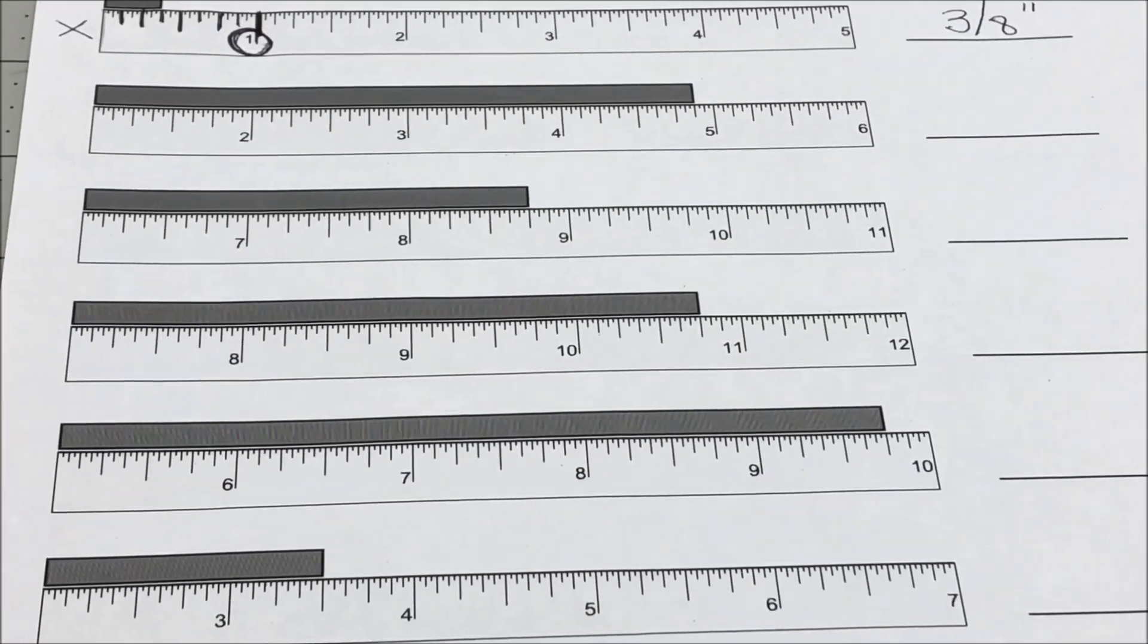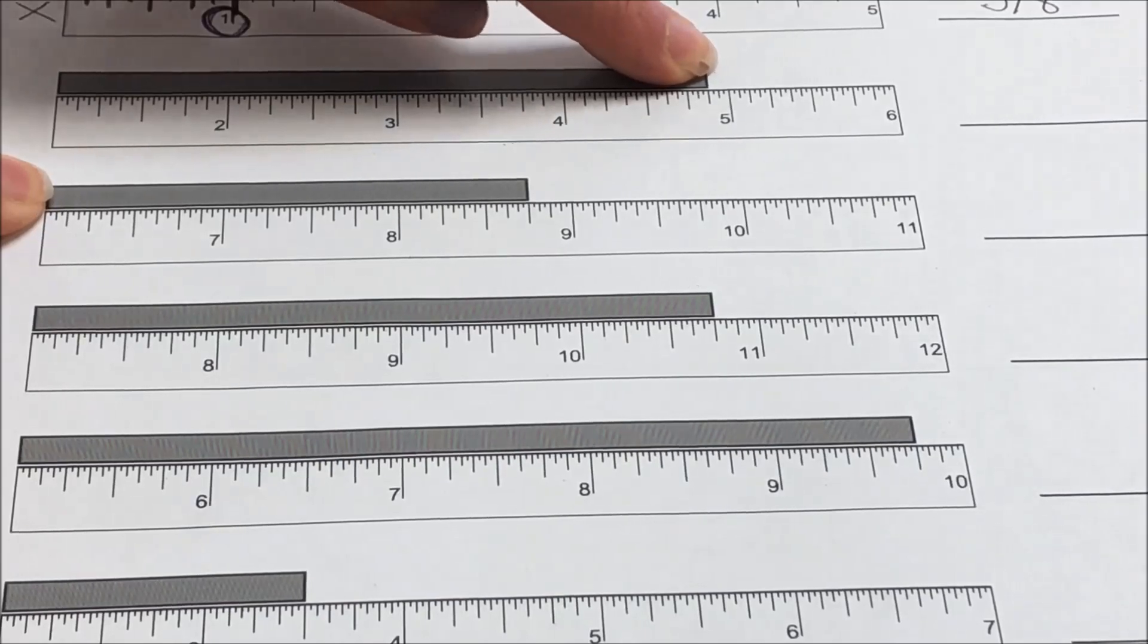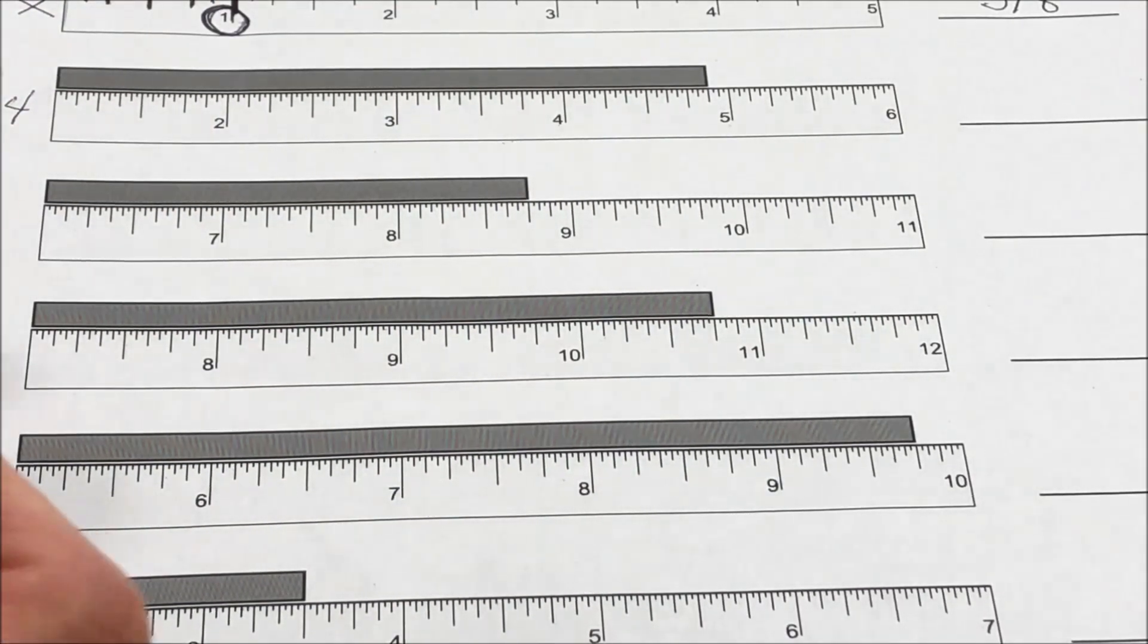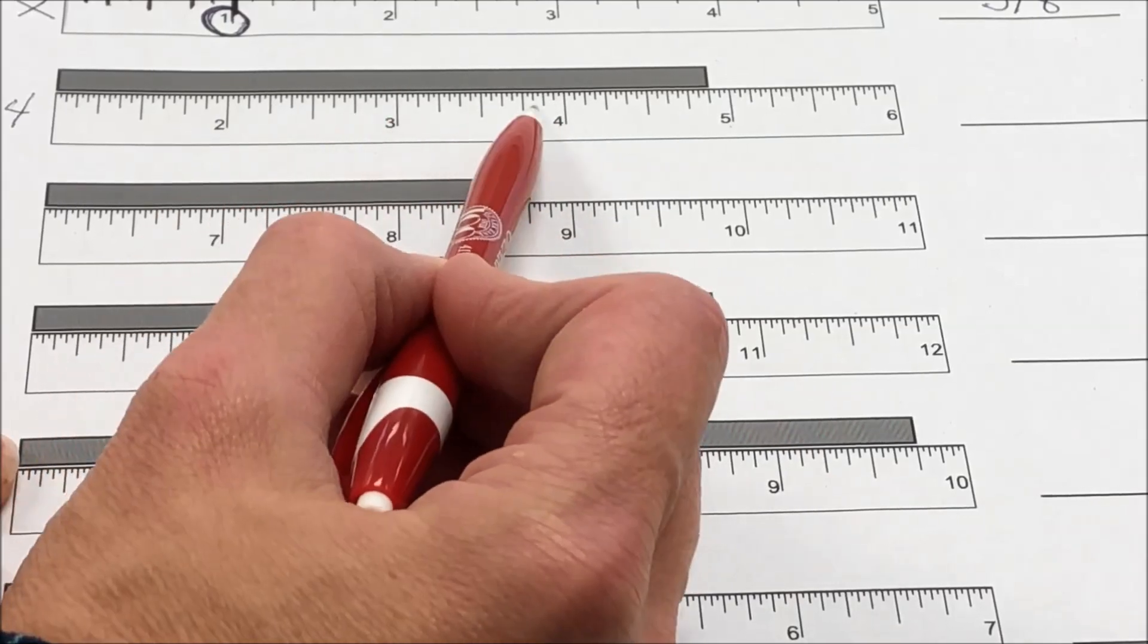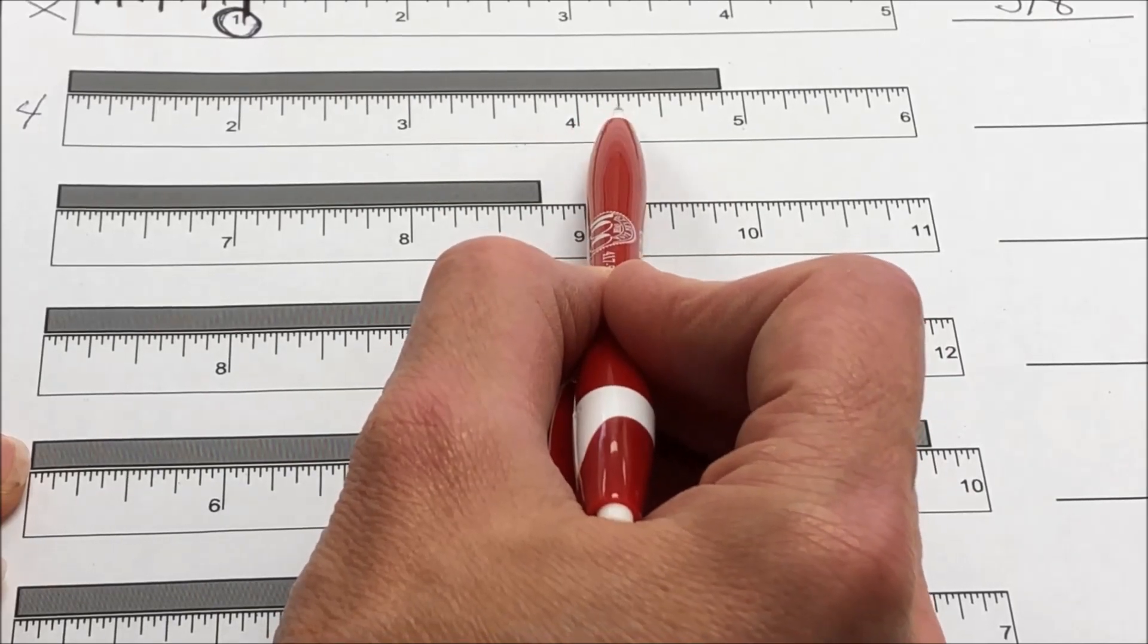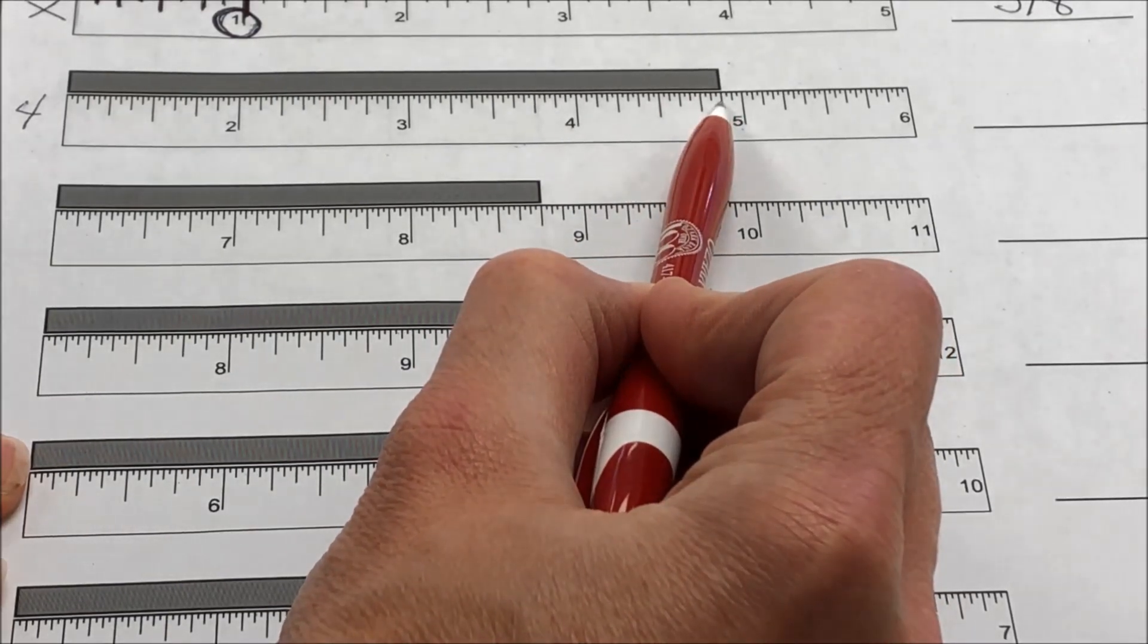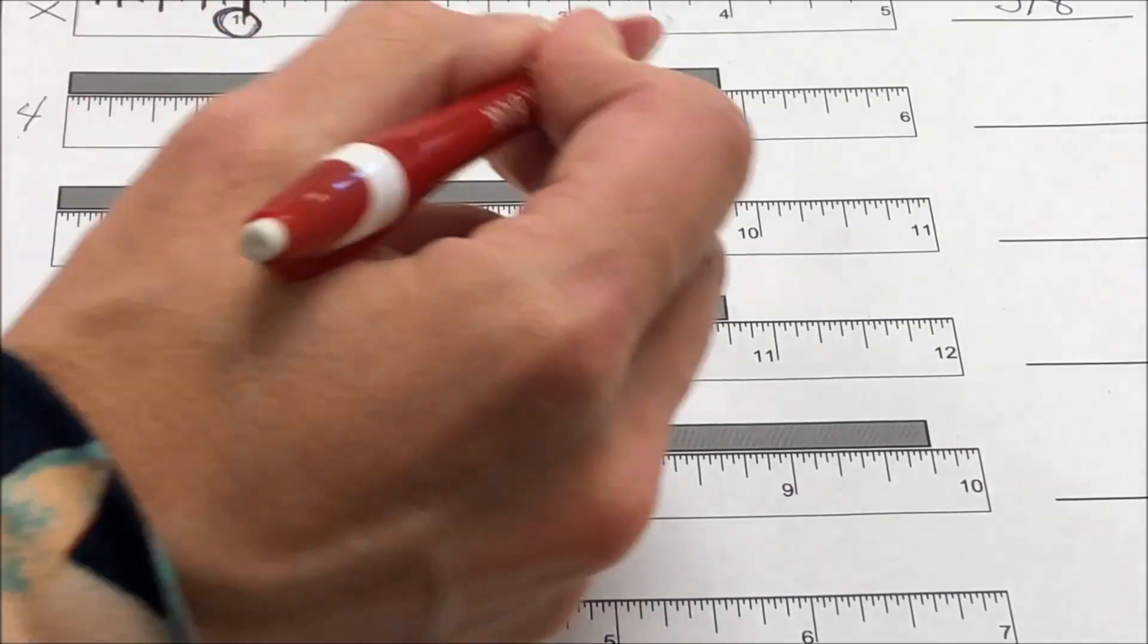For the next practice, my first thing I need to do is look at this box. Where does it end? It ends between the 4 and the 5. So I'm just going to make a note that my number is going to start with a 4. And then I don't need to look at the 1/8th increments here, here, or here. I only need to start counting them in this area. So I've got 1/8th, 2/8ths which is 1/4th, 3/8ths, 4/8ths which is 1/2, 5/8ths, 6/8ths, and the box ends at 7/8ths. So my answer is 4 and 7/8ths.